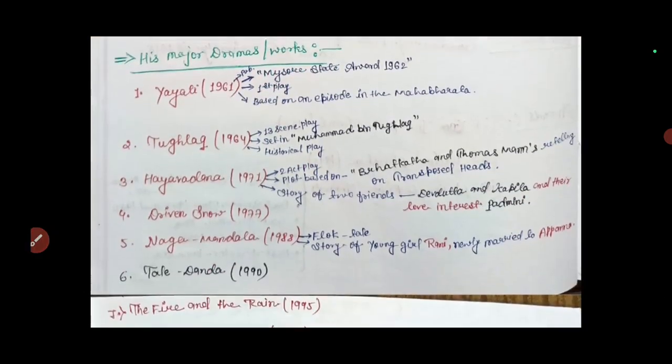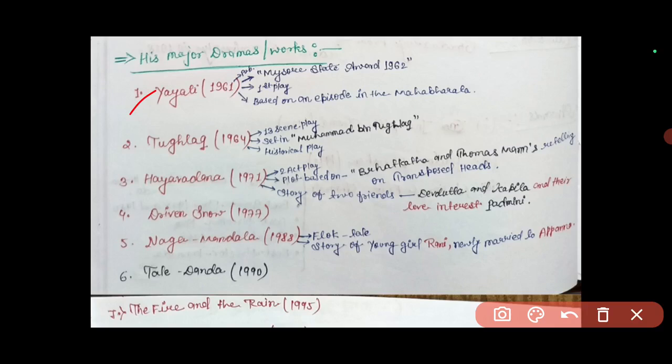Let's see his major works. First, Yayati, which I already mentioned. He started his literary career with this in 1961. It was published in 1961 and he received the Mysore State Award in 1962 for this work. This was Girish Karnad's first play based on an episode from Mahabharata.